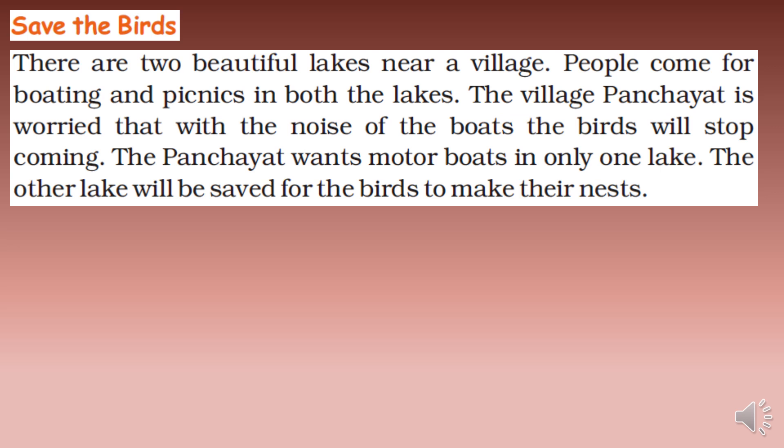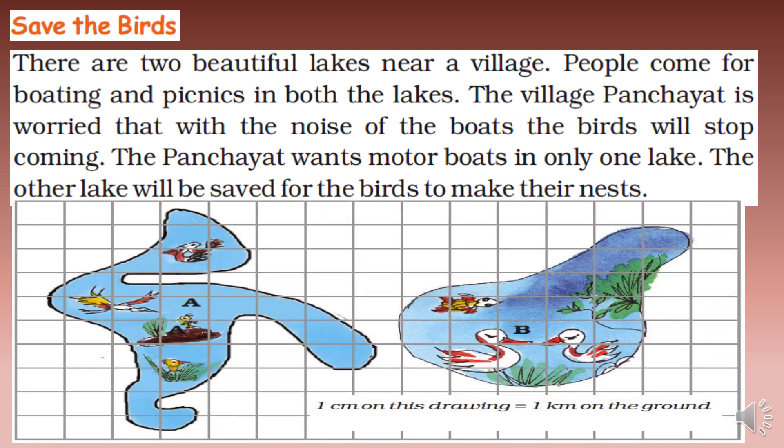Here you can see there are two beautiful lakes near a village. People come for boating and picnics in both lakes. The village panchayat is worried that with the noise of the boats, the birds will stop coming. The panchayat wants motor boats in only one lake; the other lake will be saved for birds to make their nests. You can see two lakes — Lake A and Lake B — and a scale is given: one centimeter on this drawing equals one kilometer on the ground.